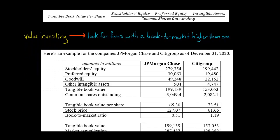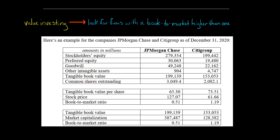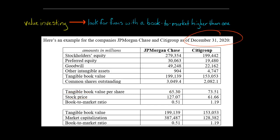Let's do an example calculating the book-to-market ratio for a couple of companies: JPMorgan Chase and Citigroup, as of December 31st, 2020. I looked up stockholders' equity, preferred equity, and so forth for these two companies. The tangible book value for JPMorgan Chase was a little over $199 billion. Dividing that by the number of common shares outstanding gives us the tangible book value per share. I also looked up the stock price — $127.07 as of the close on December 31st, 2020.